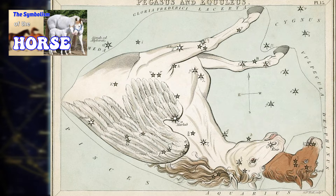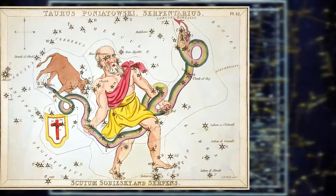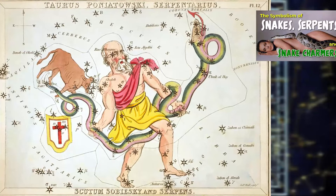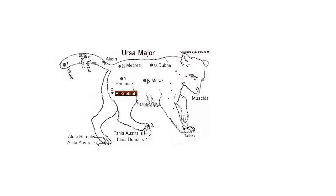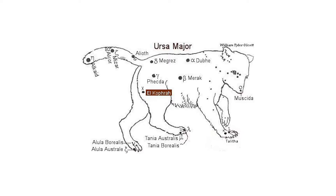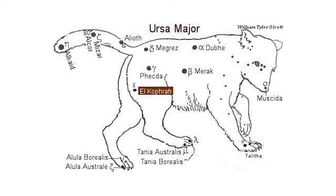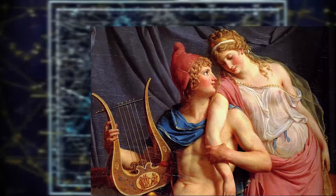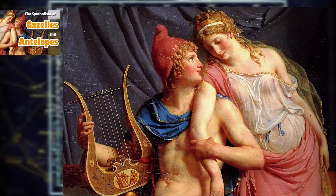Serpens, the Serpent or Snake. We have a video in the playlist for this constellation, given the more general title The Symbolism of the Snake. Talitha — the Third Leap of the Gazelle. Talitha is the name of two stars: Talitha Borealis and Talitha Australis. The constellation is not Ptolemaic but shows how constellation boundaries could be moved and renamed. We have a video in the playlist called The Symbolism of the Antelope and Gazelle.